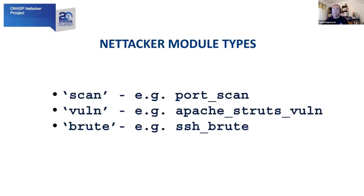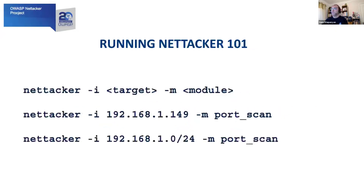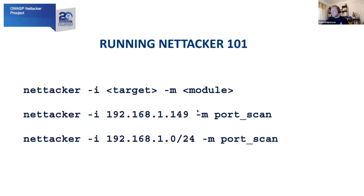That's what makes this tool great, because it combines three different types of activities: scanning for information gathering, scanning for a specific vulnerability, and brute forcing. To run NetHacker from the command line, you need to define two parameters: the target — what you want to scan — using the -I switch, and the module — which module to use — with -M. For example, if I want to perform a port scan on IP address 192.168.1.149, I call NetHacker with -I and the IP address, and -M with the port scan module. You can also scan not just one IP address but a whole network — for example, providing 192.168.1.0/24 will scan the entire Class C network, or 255 IP addresses.